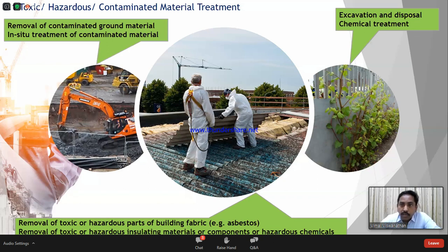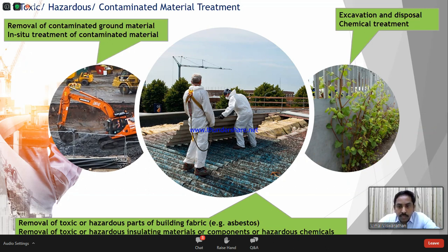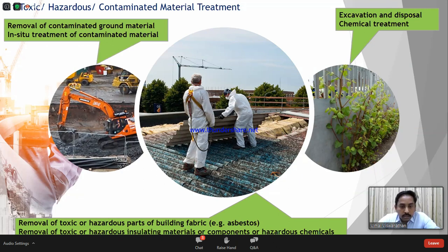The third item is excavation and disposal/chemical treatment. The plant in the picture is Japanese knotweed — a common problem in the UK. It is a highly invasive plant that destroys buildings and is a very major problem there. Specialist subcontractors work on this. You cannot just bring an excavator and remove it — it is chemically treated on a step-by-step basis over some weeks. The site is closed, repeatedly treated, with warnings and demarcation. Even if you remove it, it grows again — that is the problem with this particular plant.